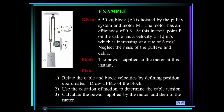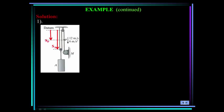So our plan is to relate the cable and block velocities by defining position coordinates, draw a free body diagram of the block, use the equation of motion to determine the cable tension, and calculate the power supplied by the motor and then to the motor.